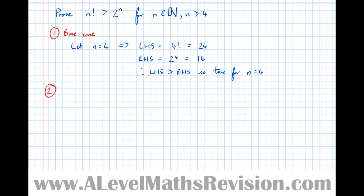Step two: the assumption. Let n equal k and assume true, i.e., k factorial is greater than 2 to the k.